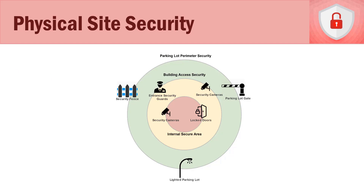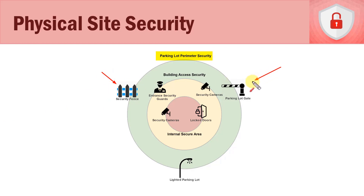Let's look at our parking lot perimeter security — the outermost portion of our physical security. In this example we have a security fence, a parking lot gate where somebody needs an ID badge to get in, and a lighted parking lot with very bright lights.